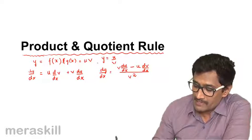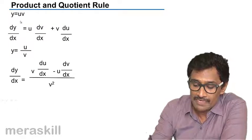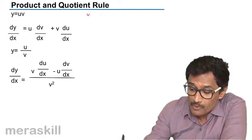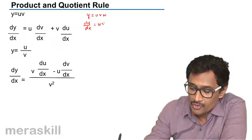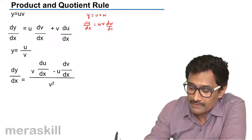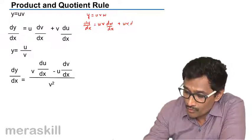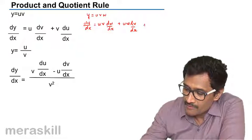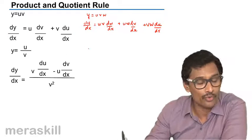Let us formalize this further. We have y = u · v and dy/dx = u · (dv/dx) + v · (du/dx). Suppose y = u · v · w. Then dy/dx = u·v · (dw/dx) + u·w · (dv/dx) + v·w · (du/dx). That means you keep pairs of functions and differentiate the remaining one.